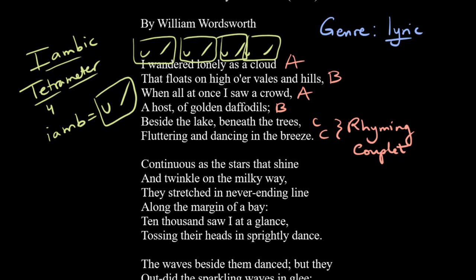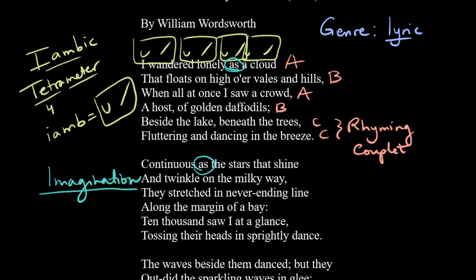We can also talk about poetic devices in the poem, and we start with a couple of similes. We have 'I wandered lonely as a cloud,' and we also have 'continuous as the stars that shine and twinkle on the Milky Way.' These similes show the poet's imagination, and he uses quite a few literary devices in part to show the power of the imagination. He's not just describing literally what he sees, but the emotional reality of what he experienced — he felt lonely as a cloud, and the daffodils seemed continuous as the stars.